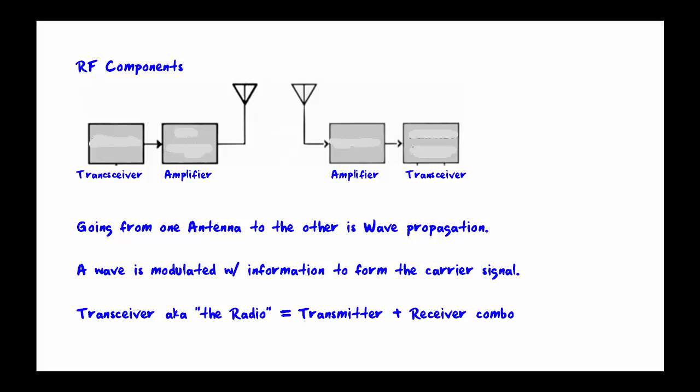Here we can see the RF components that would be used in any type of system where you want to transmit and receive radio waves. This could be, on the left side, if this was an FM radio station, then you would have your radio station and transmission tower on the left-hand side, and the right-hand side could be an FM radio in your car. If this is Wi-Fi, then on the left side, that could be your wireless access point, and on the right-hand side, that could be the radio inside your laptop or tablet or whatever. Going from one antenna across the medium of air or space, that's called wave propagation.